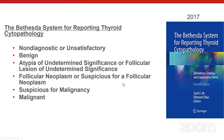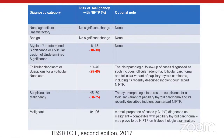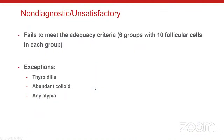The international panel asked that the Bethesda system modify the risk of malignancy column to reflect NIFTP, leading to the second edition of the Bethesda reporting system. Beyond risk of malignancy, other things were modified as well. The six diagnostic categories withstood the test of time and are reproducible and easy to follow. In the second edition, the risk of malignancy is now reduced for three categories because NIFTP is no longer considered carcinoma.